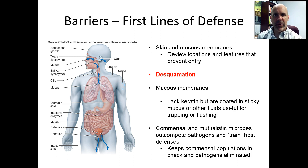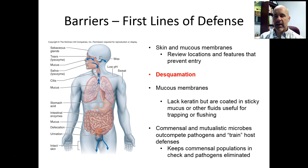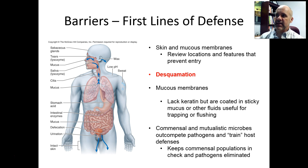Now that we're finished with that overview, let's move into the first lines of defense. We talked about this in Chapter 11 because pathogenic microorganisms, unless they cause a skin infection or an infection directly on a mucous membrane, have to have some way of invading the body and getting past these barriers. Barriers consist of the skin and the mucous membranes.